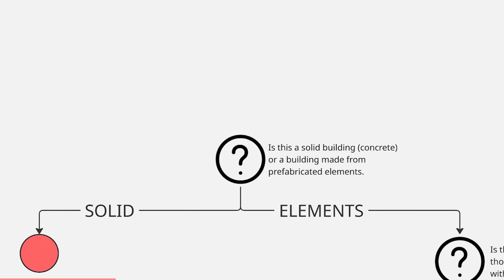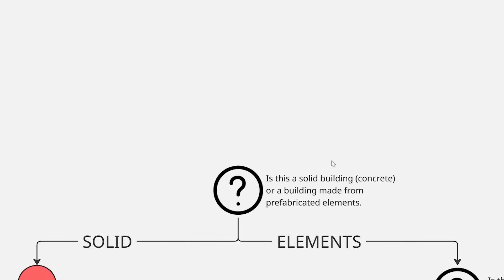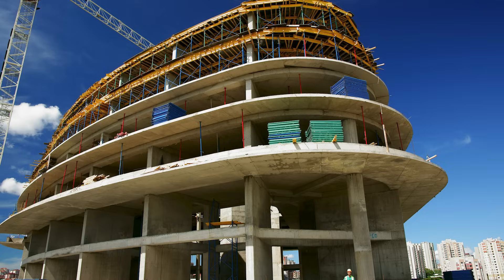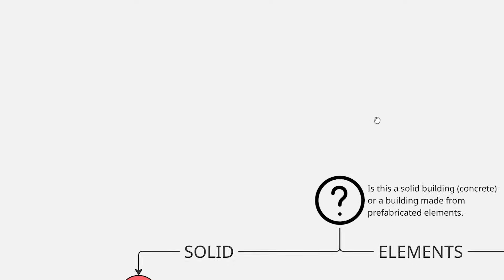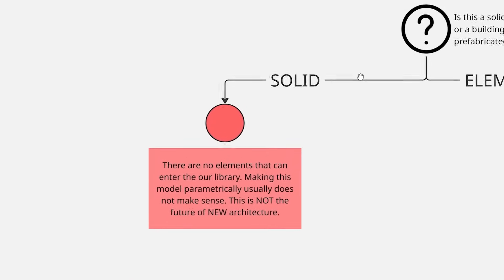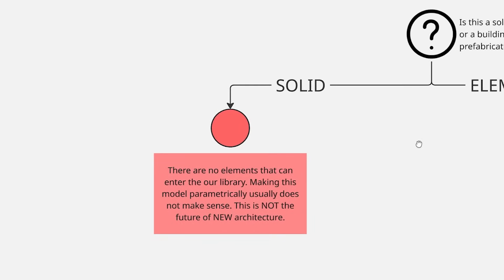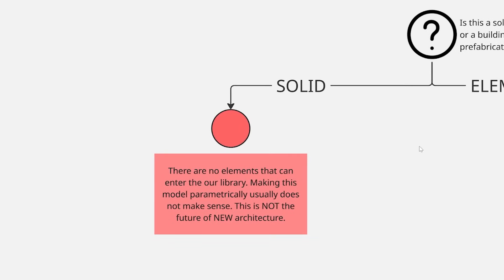As you can see on the graph, the very first question I ask is: is this a solid building — like a normal concrete building you can see built all around you in almost all cities on the planet — or is it a building made out of prefabricated elements? If the answer is solid, you hit a red mark on my graph, where I say there are no elements that can enter our library. If we build with prefabricated elements, we create a library of elements — some standard, some custom — that we can reuse and recycle, not only in modeling but later in real life as well.